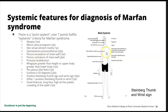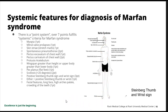Pectus excavatum — incurving of the chest — is very common and gets a point, but if it protrudes outward — pectus carinatum — you get two points. Protrusio acetabulum, seen on x-rays and causing hip issues, gets two points. A wingspan greater than height gets a point — I measure fingertip to fingertip with arms outstretched and compare to body length; if it's greater than 5% more, that's positive. Flat feet get a point, scoliosis greater than 20 degrees gets a point, and a positive Steinberg thumb and wrist sign — where the thumb extends past the palm when crossing the hand — gets points as well.